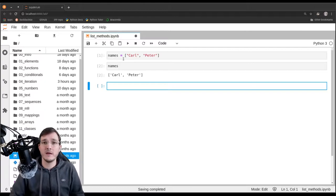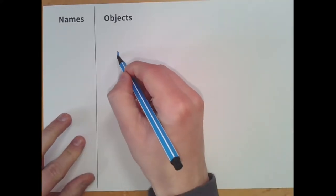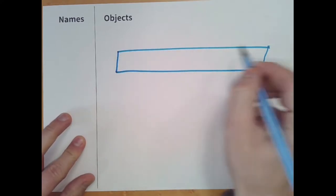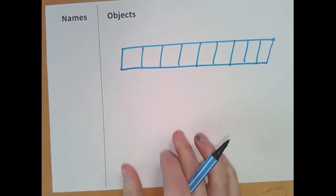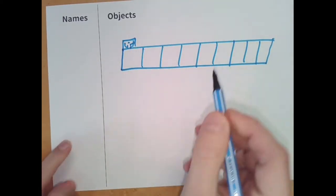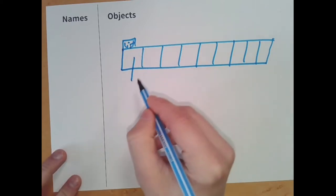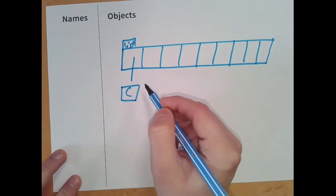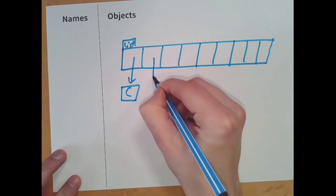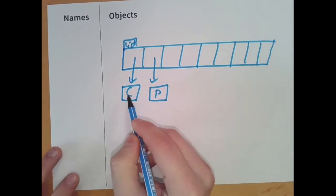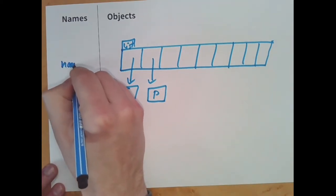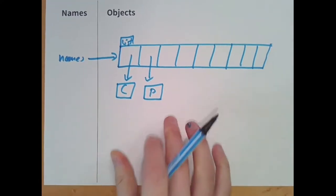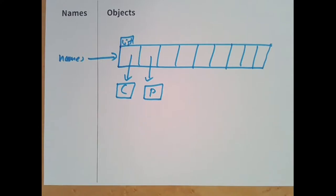Names is indeed a list with two names. In memory, what that looks like is: we create a list object — a list data type — and for the first element we have Carl, abbreviated as C, and the second name is Peter, abbreviated as P. These are actually string objects. The variable 'names' references this list object.